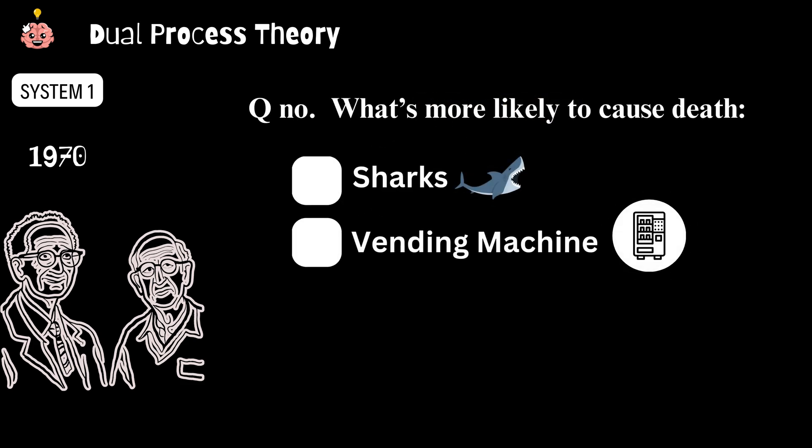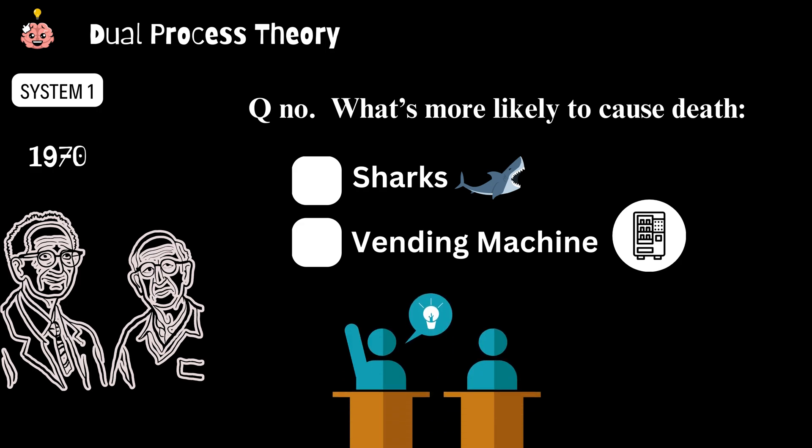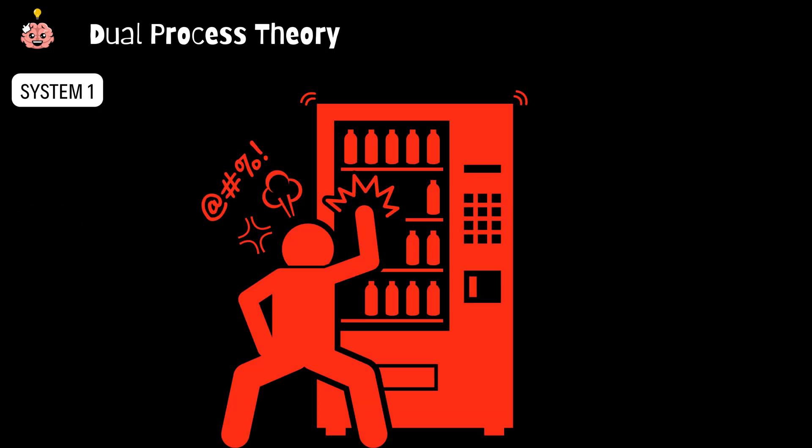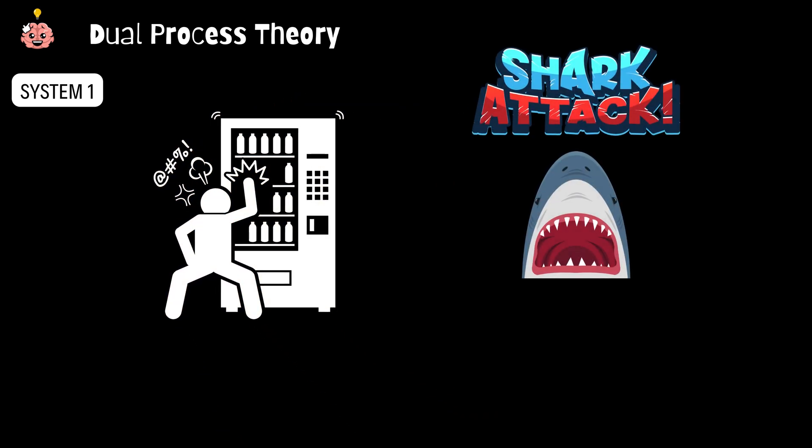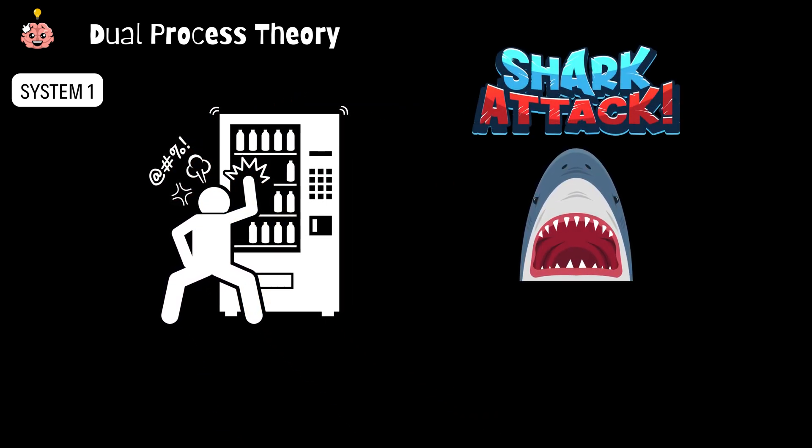what's more likely to cause death, sharks or vending machines? Most people immediately scream sharks. But in reality, more people die each year from vending machines than from shark attacks. Yup, that snack machine is deadlier than a great white. System one jumps to whatever feels most familiar or dramatic, even if it's wrong.